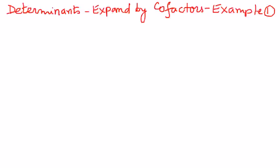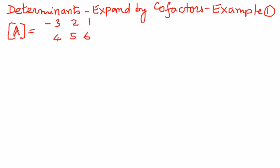The example we have here is as follows. Let's say we have matrix A as negative 3, 2, 1, 4, 5, 6, 2, 3, and 1. Let us say this is the matrix we have.